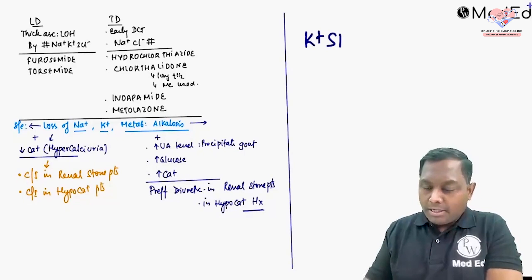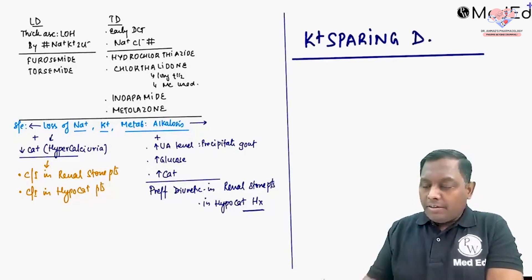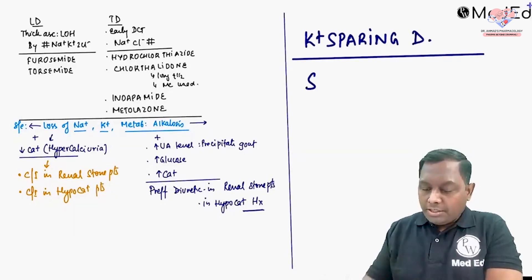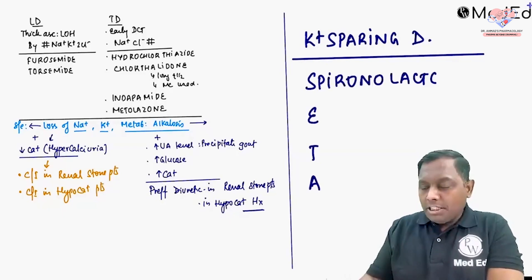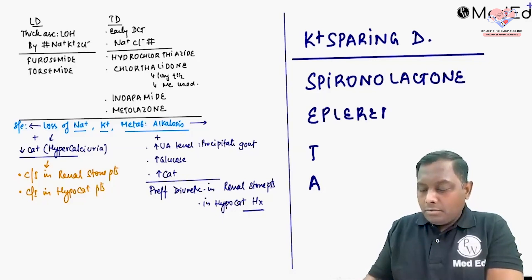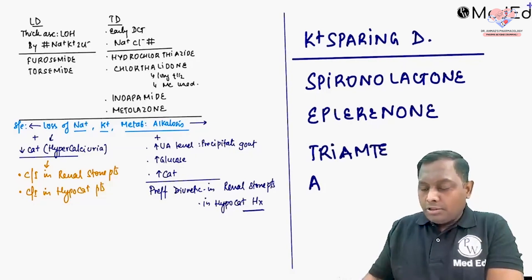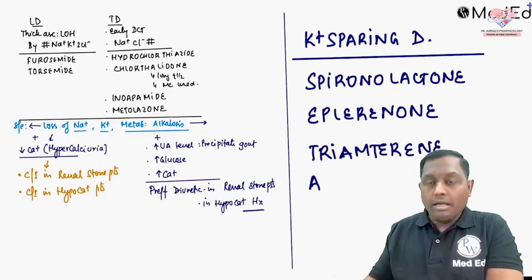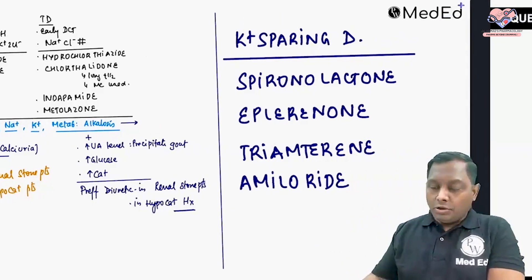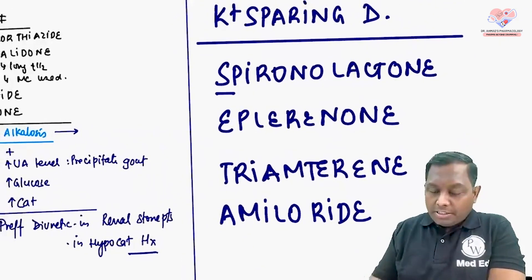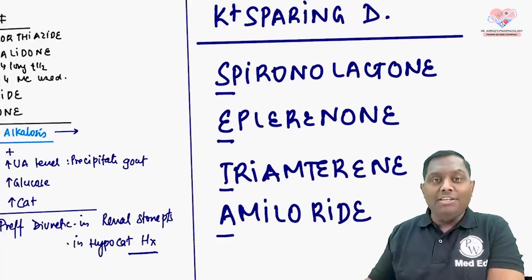We also have potassium-sparing diuretics, remembered by the mnemonic SETA: Spironolactone, Eplerenone, Triamterene, and Amiloride.